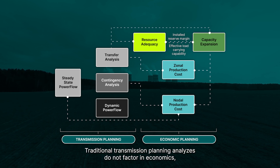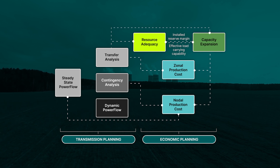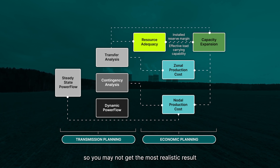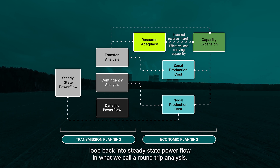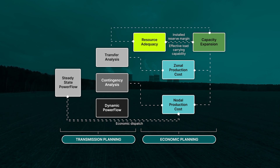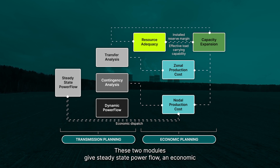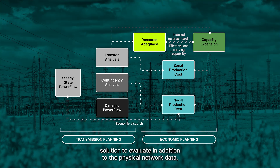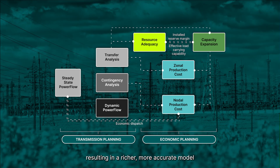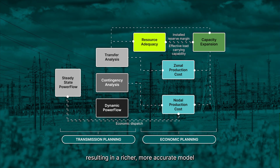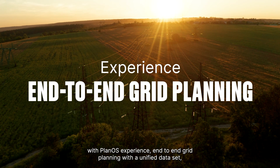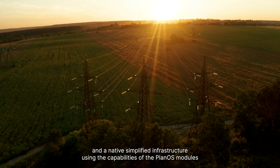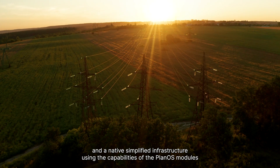Traditional transmission planning analyses do not factor in economics, so you may not get the most realistic result. With integrated system planning, the two Production Cost modules loop back into Steady-State Power Flow in what we call a round-trip analysis. These two modules give Steady-State Power Flow an economic solution to evaluate, in addition to the physical network data, resulting in a richer, more accurate model. With PlanOS, experience end-to-end grid planning with a unified dataset and a native, simplified infrastructure using the capabilities of the PlanOS modules.